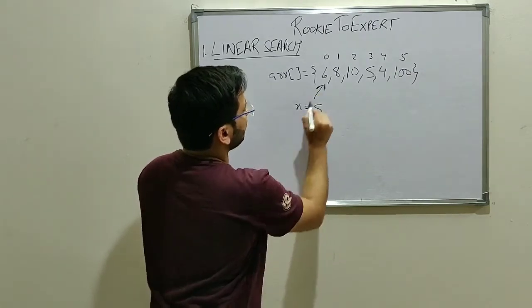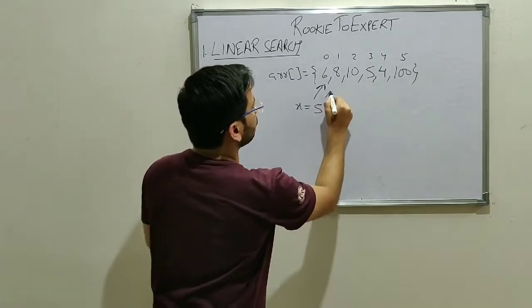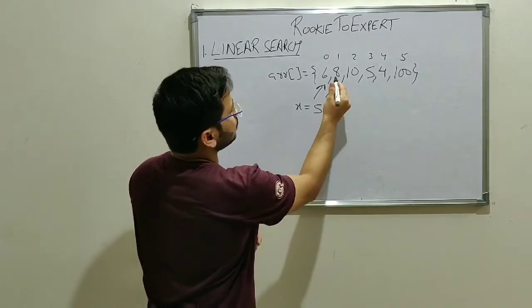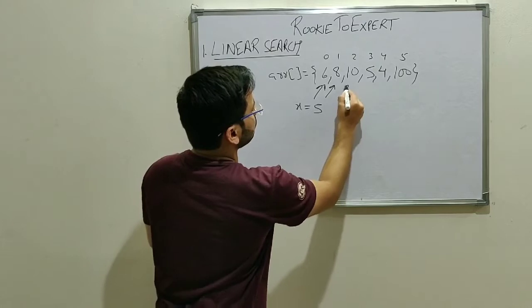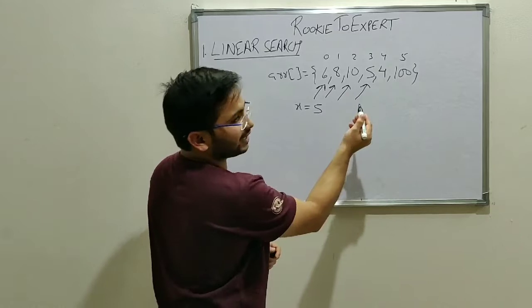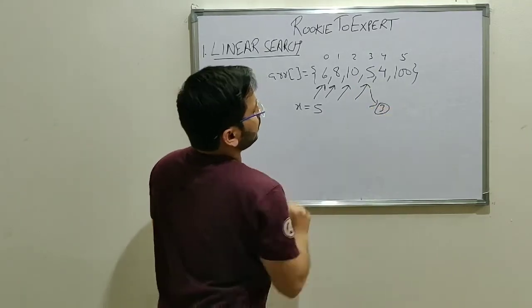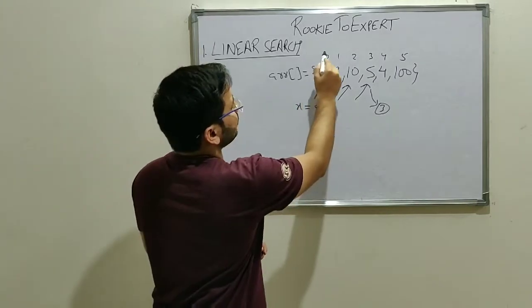So we go, we see is x 5 equal to 6? No. So we go forward. Is 5 equals to 8? No. So we move forward. Is 5 equals to 10? No. So we move forward. Is 5 equals to 5? Yes. So we return the index. That is 3. Here we are returning the exact index of the array.